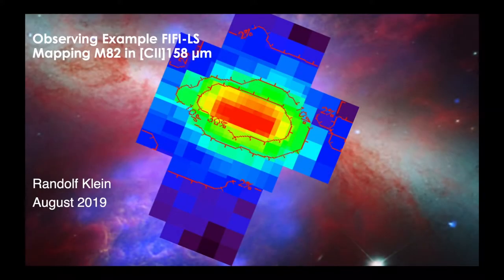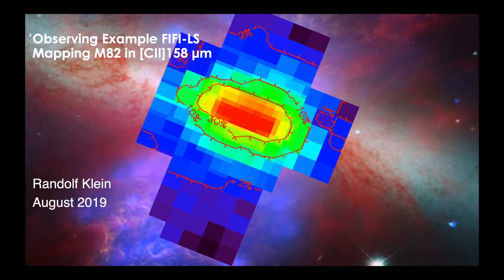In this example, I will demonstrate how to plan a FIFI-LS observation. The tutorial will cover observing time estimates and how to specify those observing details which are required during phase 1 of the SOFIA proposal process in USPOT. USPOT is the SOFIA proposal tool which you will need to submit your proposal and the observing details. As target for this exercise, the galaxy M82 is selected.